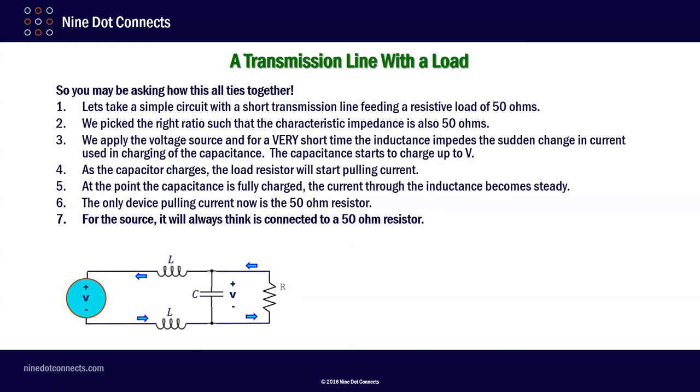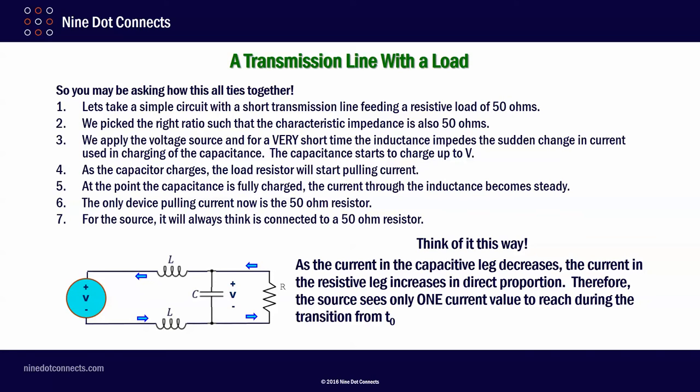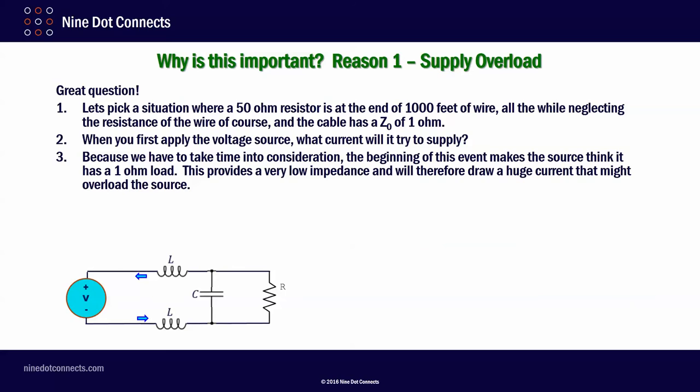For the source, it always thinks that it's connected to a 50 ohm resistor because the inductors controlled the increase of the current. So think of it this way. As the current in the capacitive leg decreases, the current in the resistive leg increases in direct proportion. Therefore, the source sees only one current value to reach during the transition at T0.